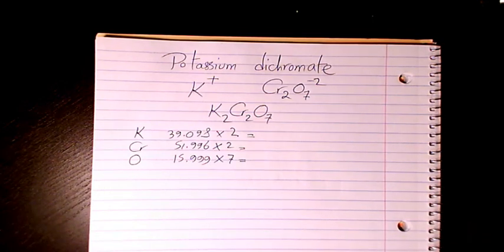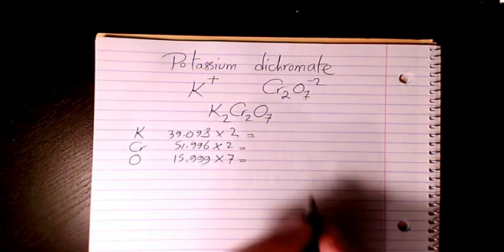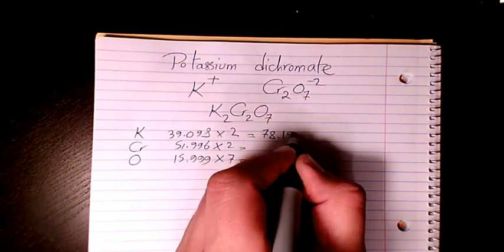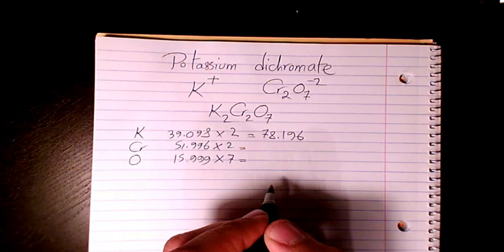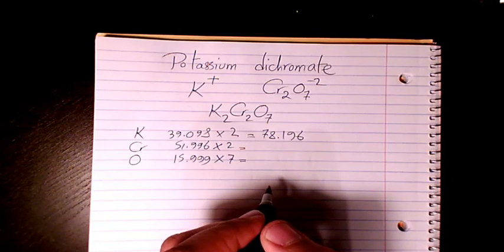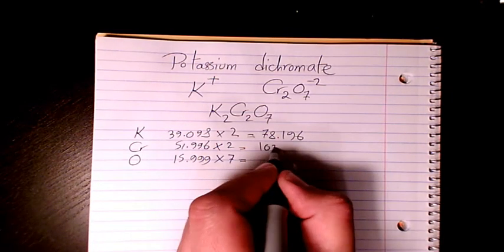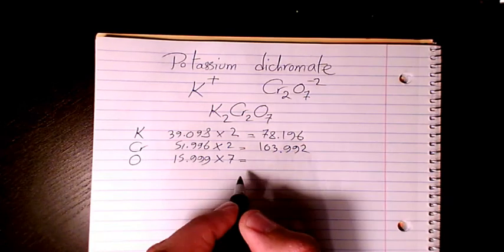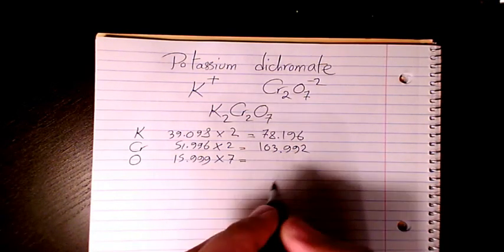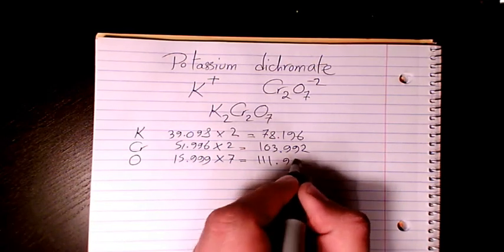39.098 times two which is 78.196. 51.996 times two which is 103.992. Then 15.999 times seven, that makes it 111.993.